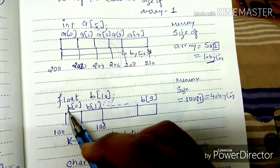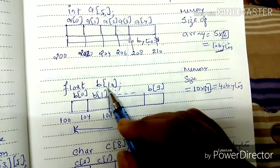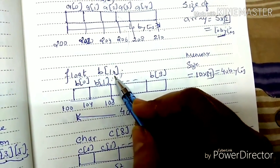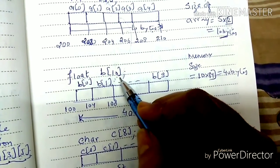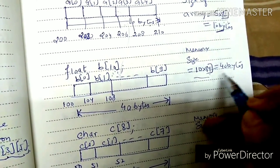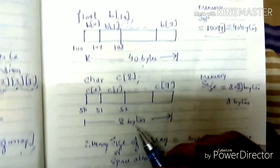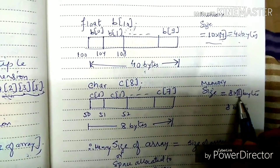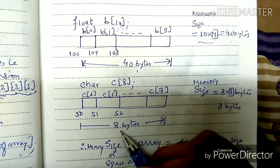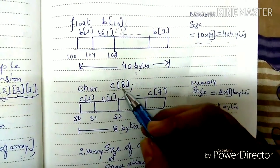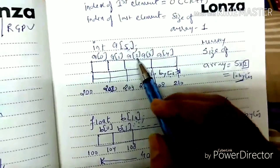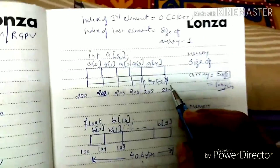If we make a float array B[10], how much memory is allocated? One float takes 4 bytes, so 10 into 4 equals 40 bytes. For a character array of 8 characters, it is 8 bytes, because 8 into 1 byte equals 8 bytes.